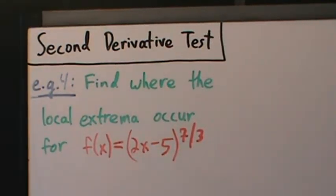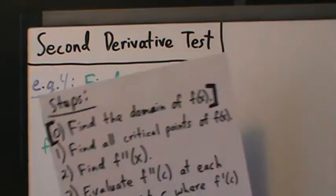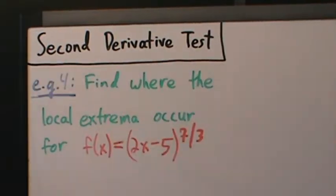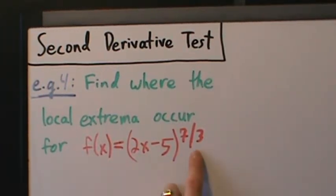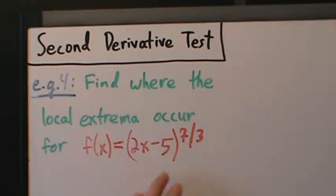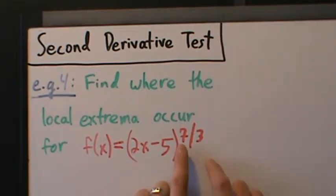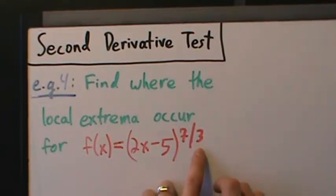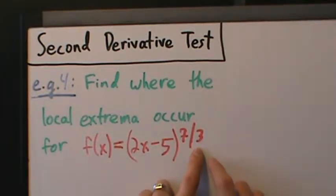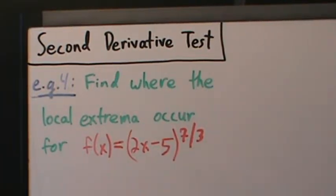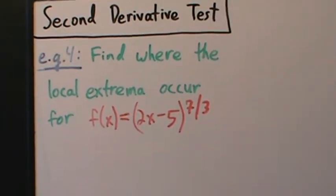So if we go back to our steps here, Step 0: find the domain of f(x). In this case, we're taking a real number x, multiplying it by 2, subtracting 5, and then raising to the 7/3. The only place we might have to worry about is this to the 7/3. But you can take any number and raise it to the 7/3 — the 1/3 is just like a cube root, and that's okay for any real number. So the domain is all real numbers. No domain restrictions here.